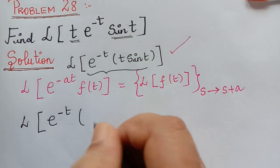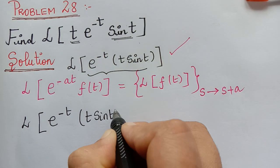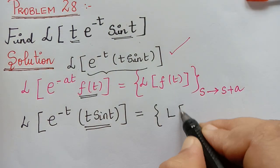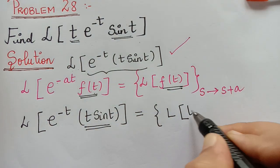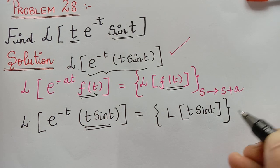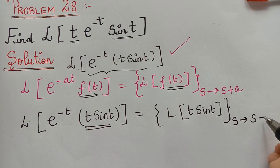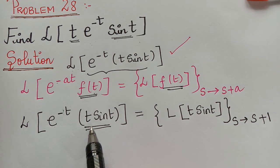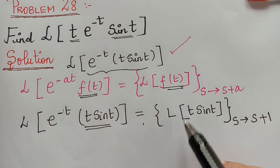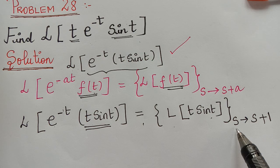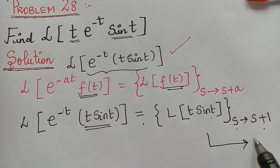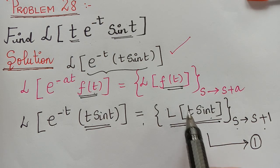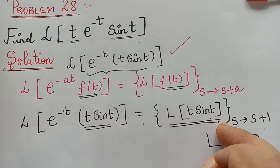We have to find the Laplace transform of e^(−t)·t·sin(t), where f(t) = t·sin(t). So the problem reduces to finding the Laplace transform of t·sin(t), and then in the resulting solution we replace s by s+1, since a=1. Let us mark this as equation 1, and first find the Laplace transform of t·sin(t) separately.